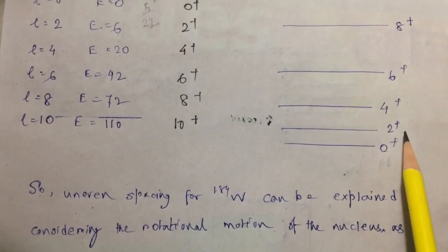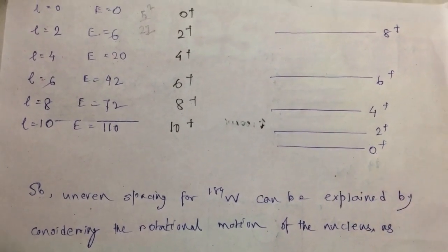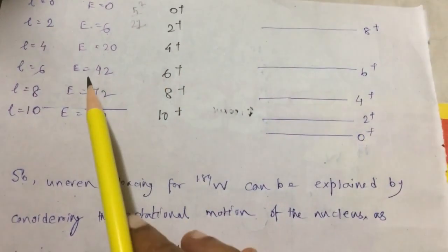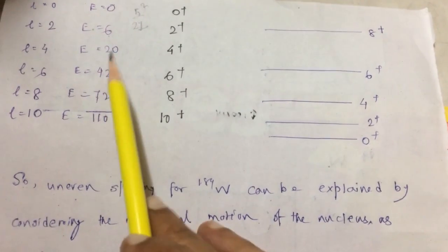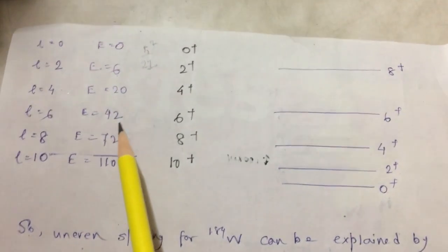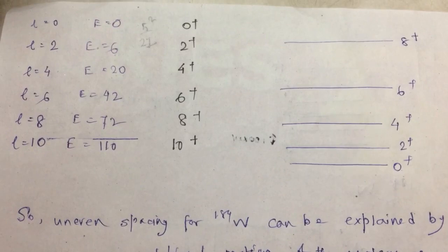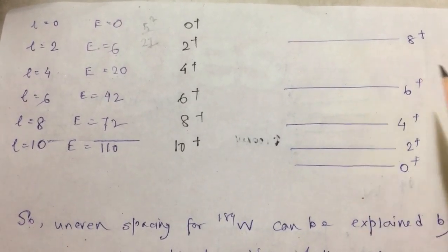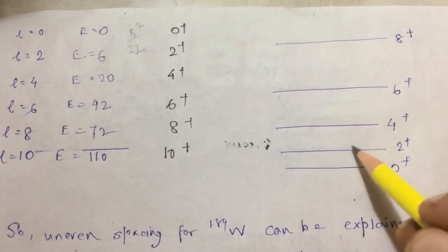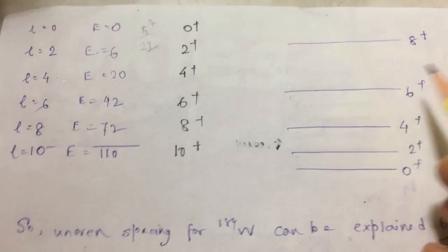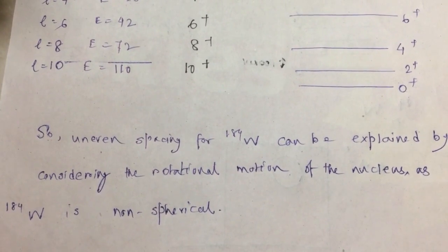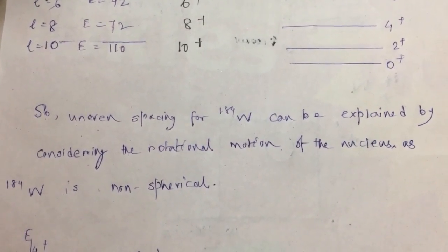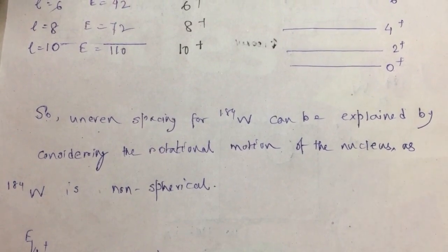And this uneven spacing, what we have just calculated from this by calculating the energy values corresponding to different L values—so this anomaly, that is, a non-uniform spacing of the energy levels, can be explained only if we take the rotational motion of the nucleus.